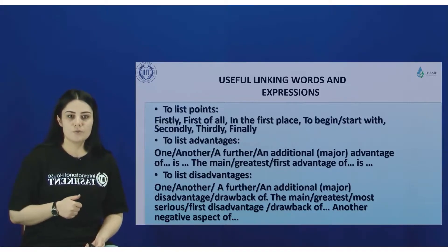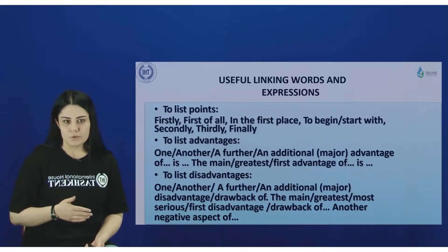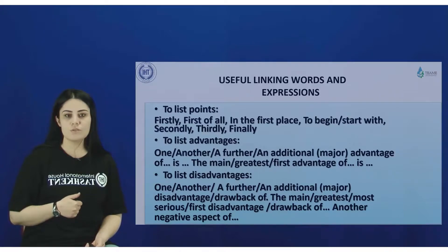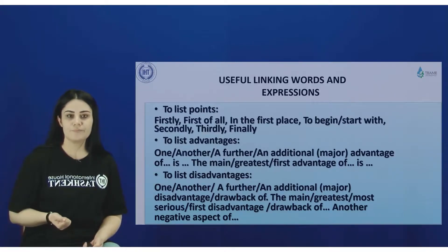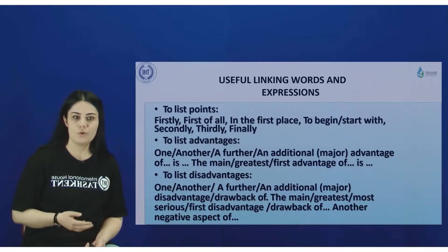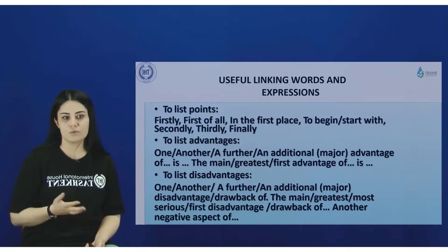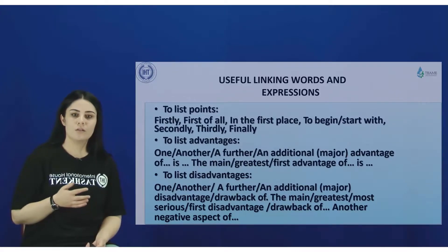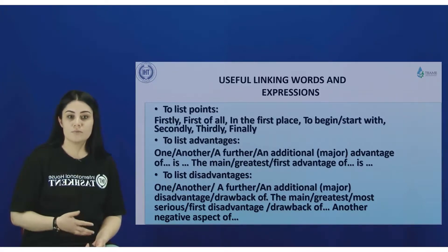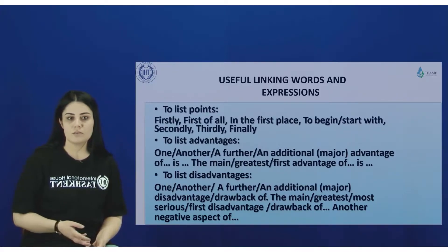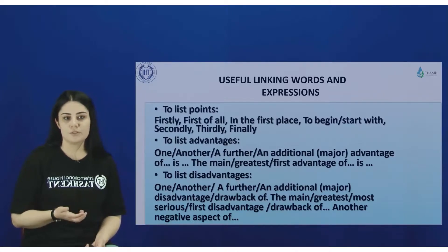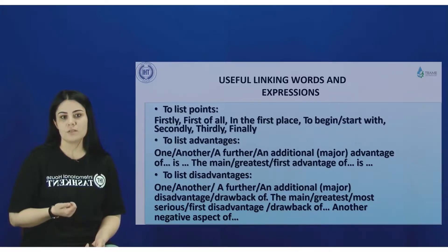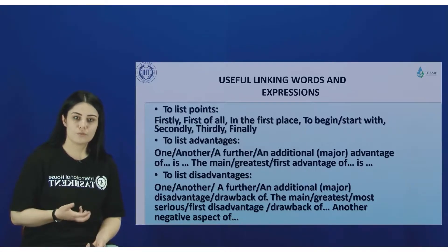Here are several useful linking words and expressions to use in for and against essays. To list points: firstly, first of all, in the first place, to begin or to start with, secondly, thirdly, finally. To list advantages: one, another, a further, an additional major advantage of this; the main, greatest, or first advantage of this.